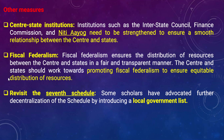To strengthen center-state relations, institutions such as the Interstate Council (Article 263), the Finance Commission (Article 280), and NITI Aayog need to be strengthened to help ensure a smooth relationship between center and states. Fiscal federalism is another important area. GST has made states increasingly dependent on the center for financial resources, and fiscal federalism would ensure distribution of resources between center and states in a fair and transparent manner.